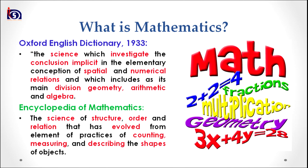There are some other definitions as well. The Oxford English Dictionary in 1933 defines mathematics as the science which investigates the conclusions implicit in the elementary conception of spatial and numerical relations, and which includes as its main divisions geometry, arithmetic, and algebra. The Encyclopedia of Mathematics defines it as a science of structure, order, and relation — a calculation that has evolved from the practice of counting, measuring, and describing the shapes of objects.